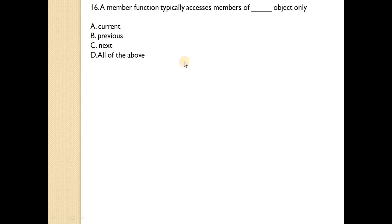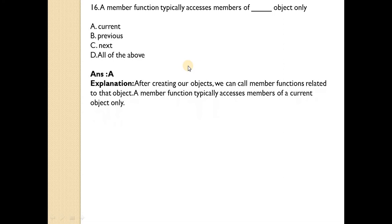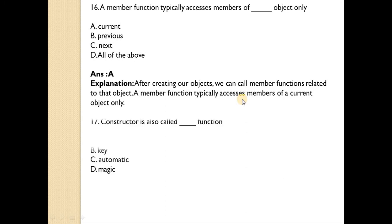A member function typically accesses members of which object? Answer is A — current. After creating objects, we can call member functions related to that object. A member function typically accesses members of the current object only.